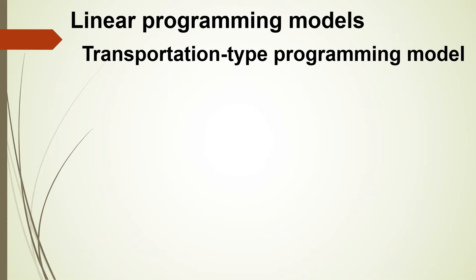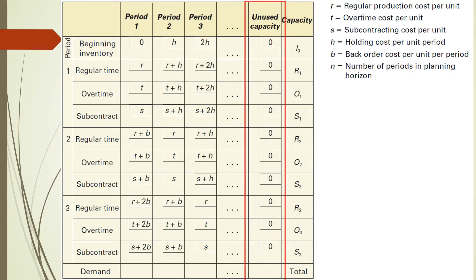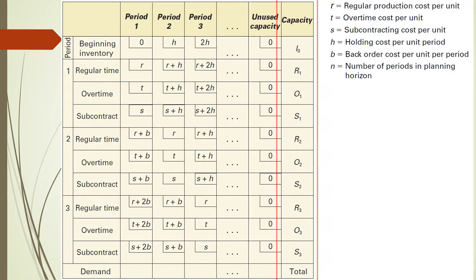This table shows the notation and setup of a transportation table. These columns detail how the demand for each period will be fulfilled, and the last row shows the forecasted demand for each period. The unused capacity column is illustrated to satisfy the requirement of linear programming — that capacity and demand be equal. Since it does not cost anything extra to not use capacity, cell costs of zero have been assigned. The cells of the last column illustrate the total capacity of each period.